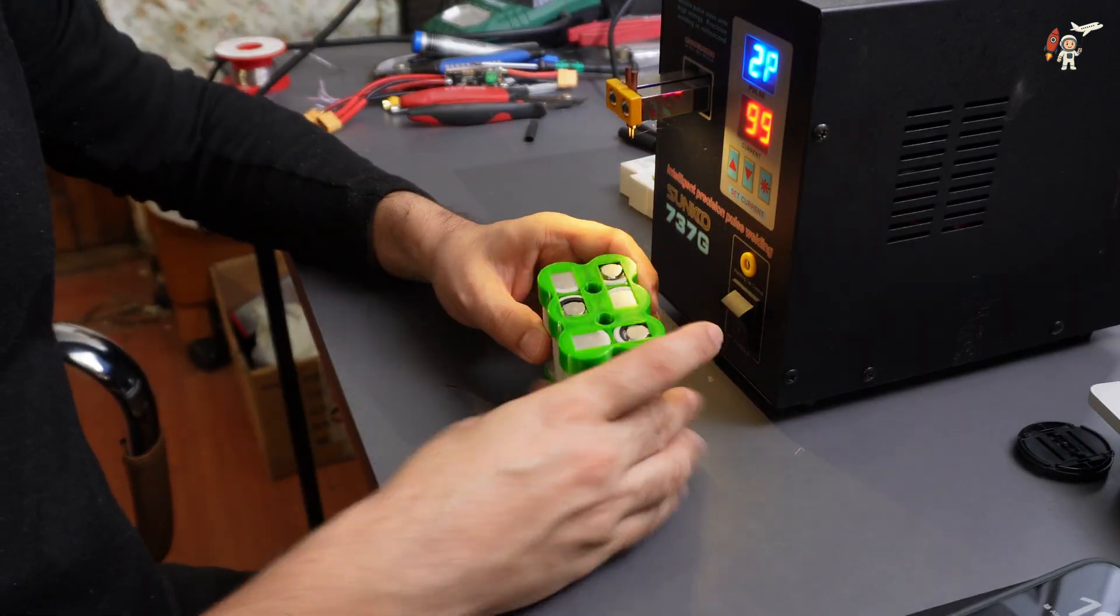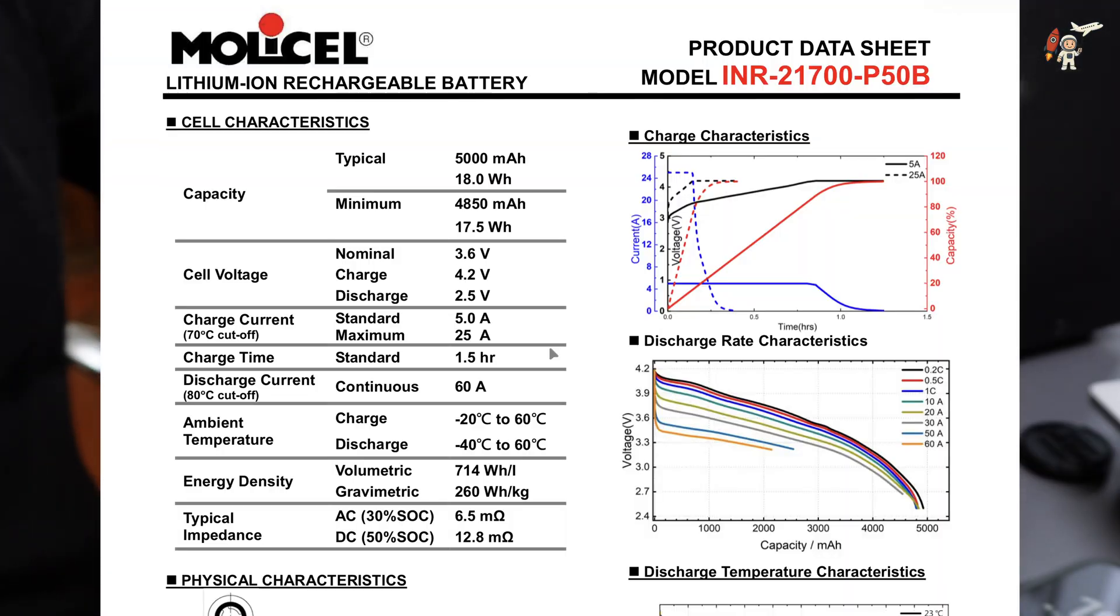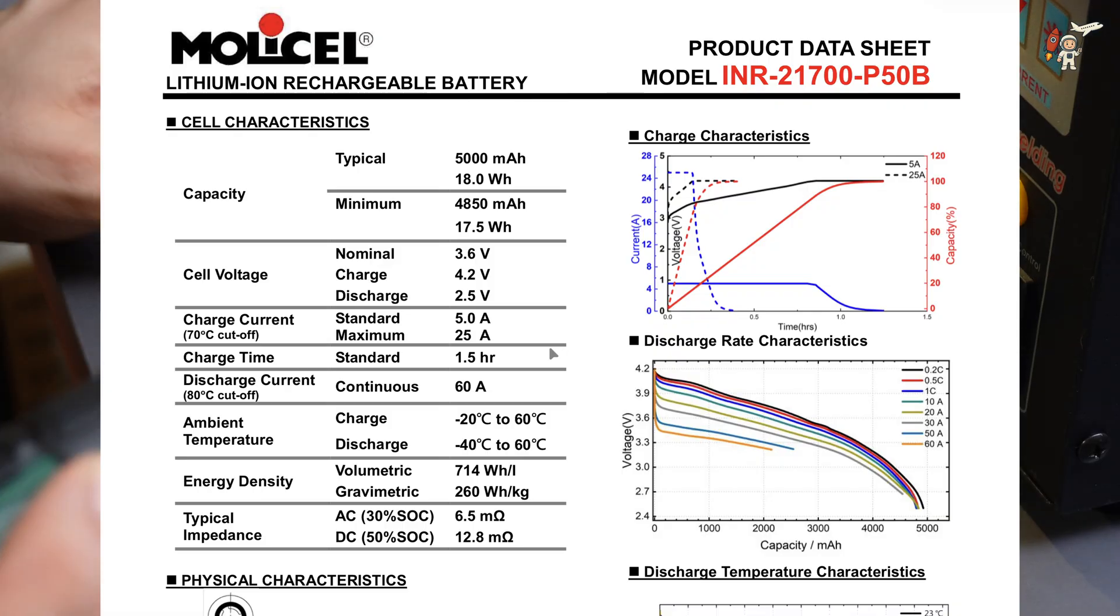Currently I have six cells, MOLYCELL P50B, which are high current cells.